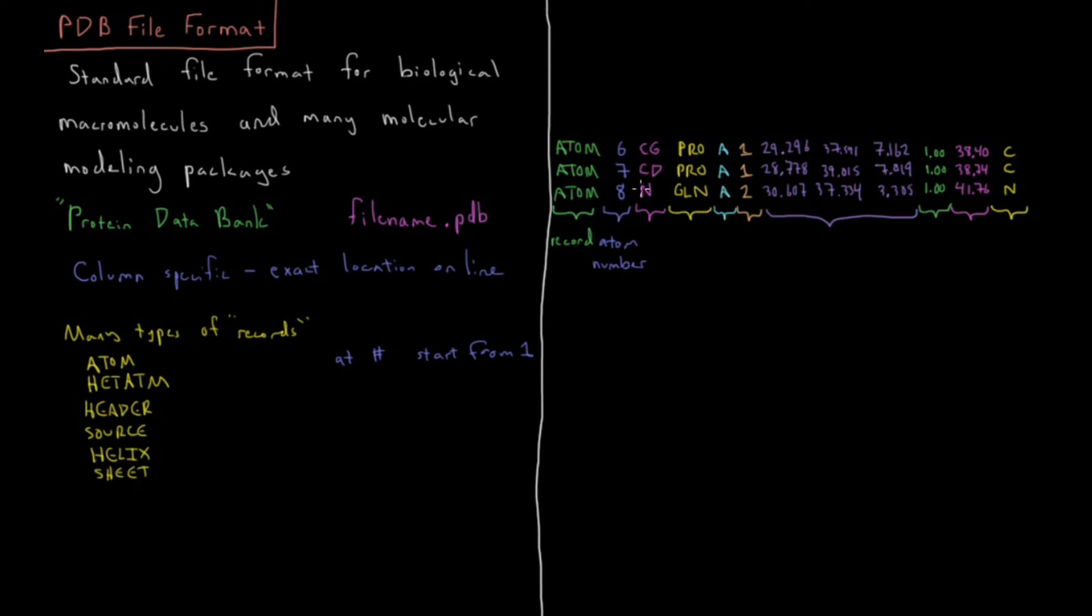We have this next column here. That is the atom type. That gives us information about what this particular atom is. Moving ahead to the next line, I have a preview for explaining what atom type means.